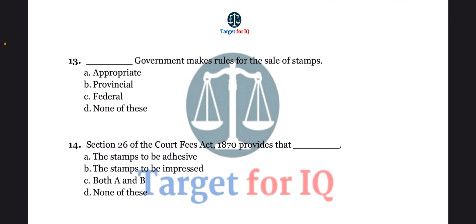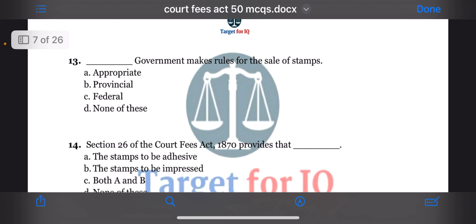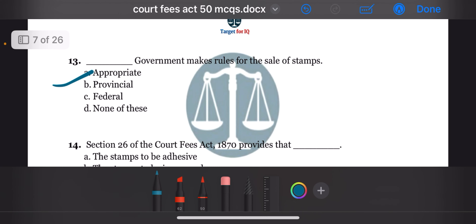Next question: dash government makes rules for the sale of stamps. The options are A. Appropriate, B. Provincial, C. Federal, or D. None of these. The correct answer is option A. Appropriate.